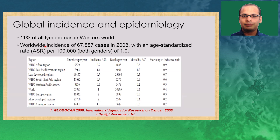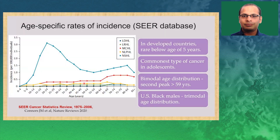Hodgkin lymphoma comprises around 11% of lymphomas in the Western world, with an age-standardized ratio of around 1. Both genders are almost equally affected, although we see more male patients in our scenarios. Looking across the world, there are regional variations in incidence, with higher incidence in developed countries, lower incidence in African and Southeast Asian countries, and least incidence in Western Pacific regions. However, mortality is higher in developing countries and least in developed countries. There are also age-related incidence variations: a peak in adolescents and young adults and a late peak in the elderly population. It is one of the commonest cancers in adolescents, with a bimodal peak, and in US males a trimodal peak as well.